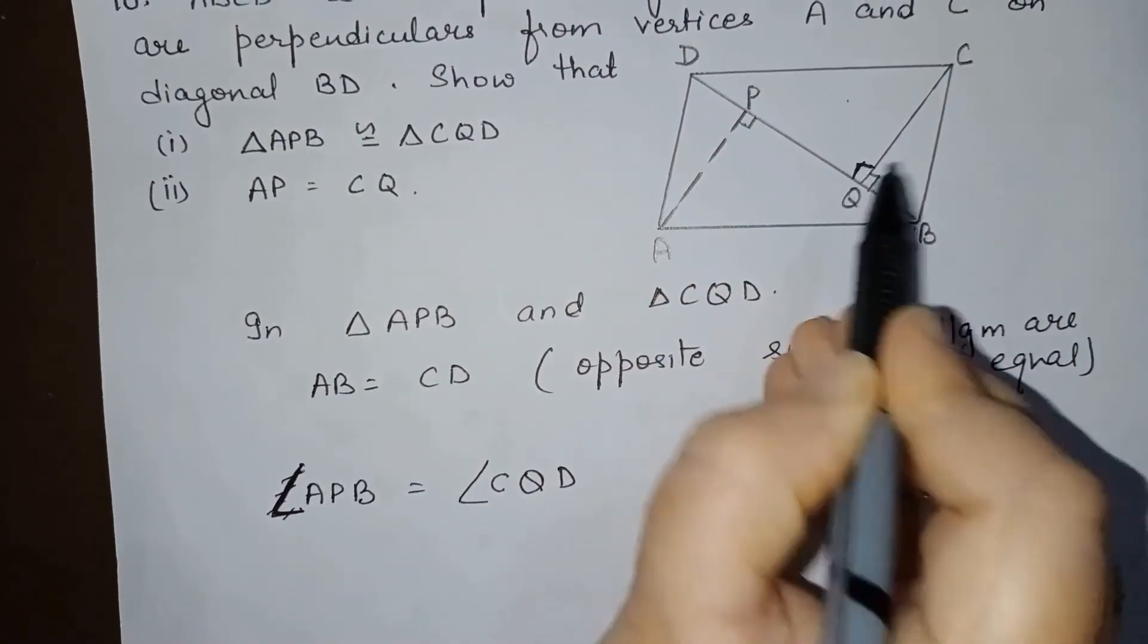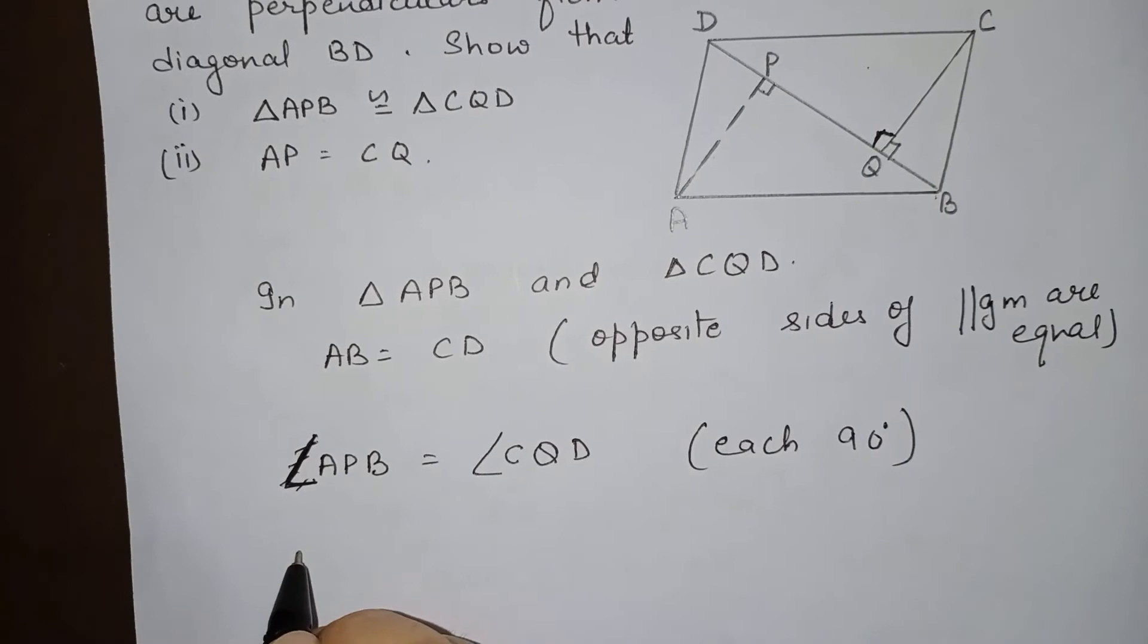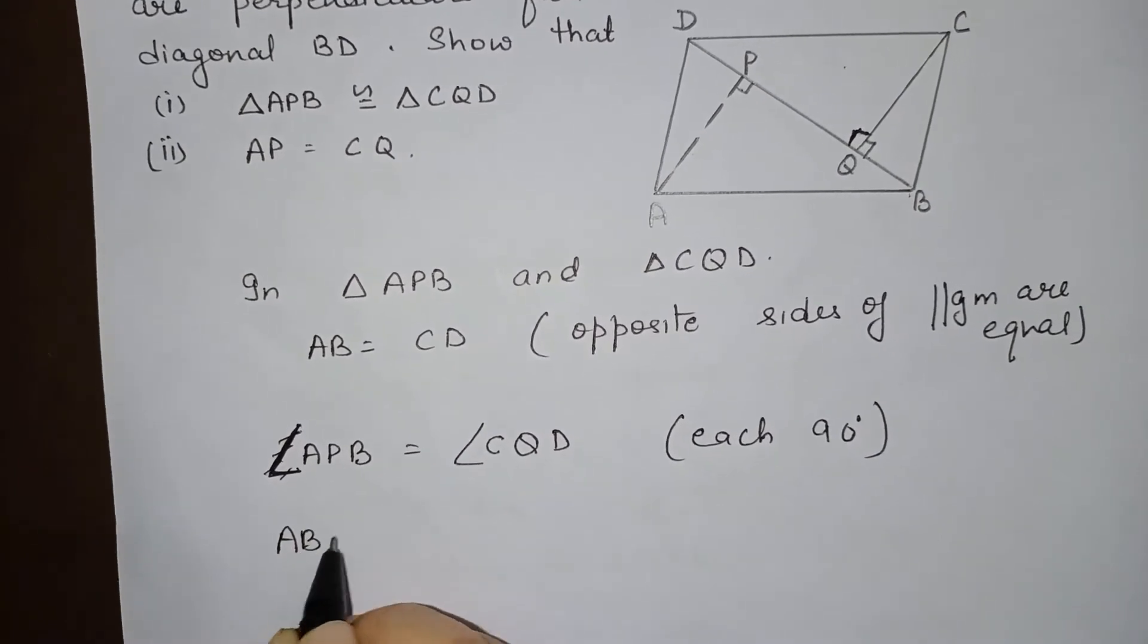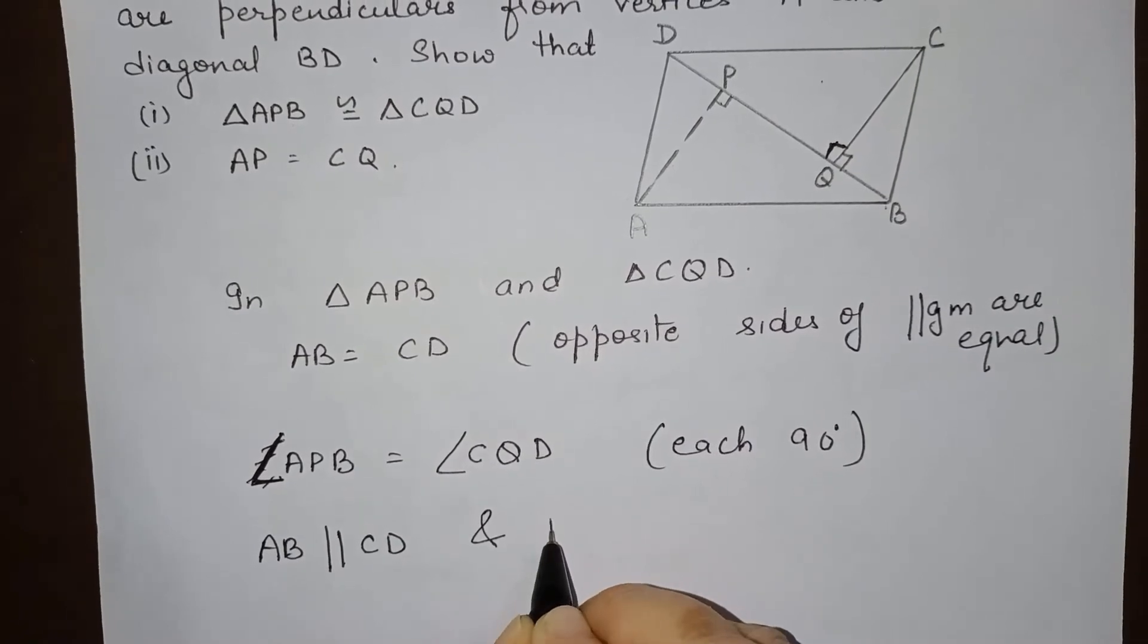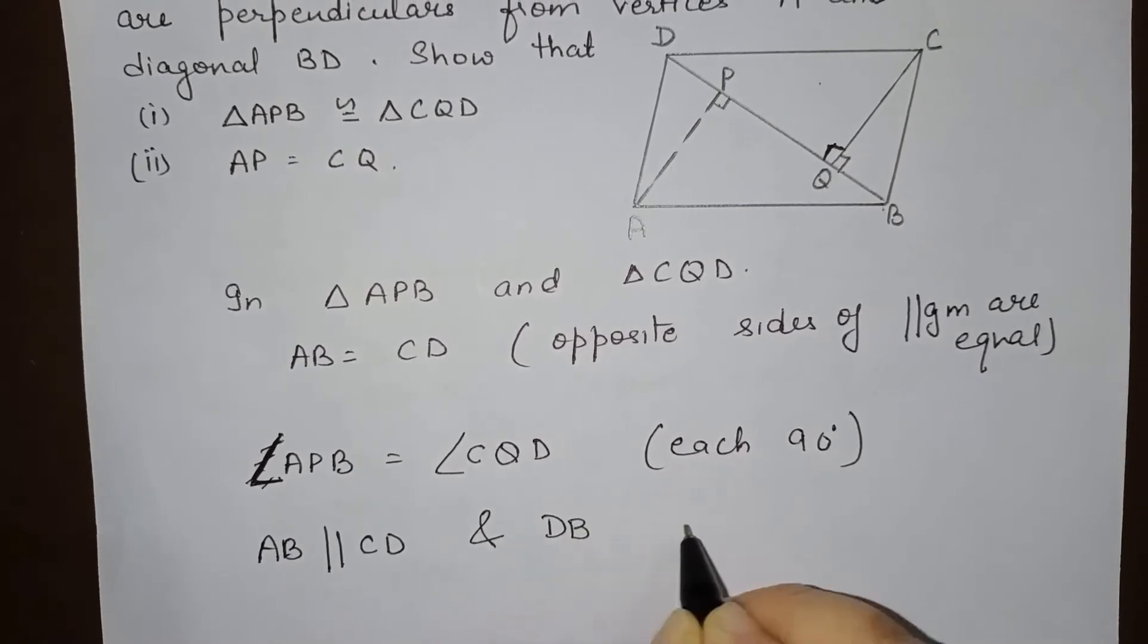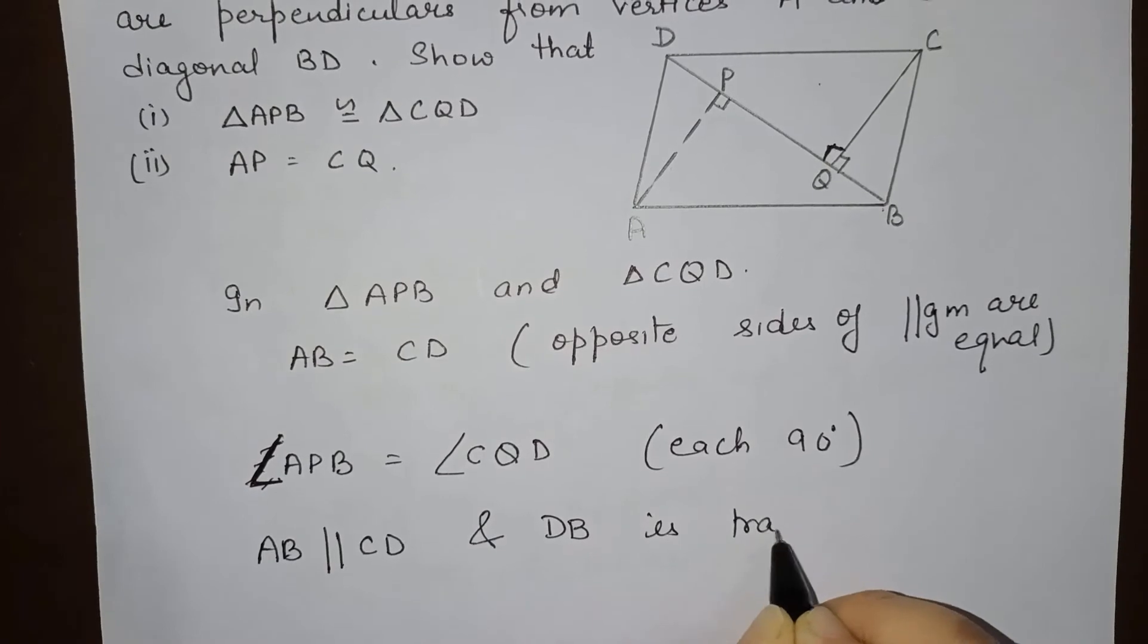Now one more thing: AB is parallel to CD as it is a parallelogram, and BD is the transversal, DB is transversal.